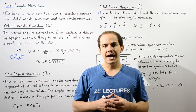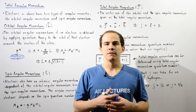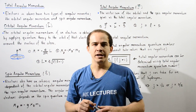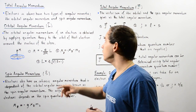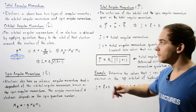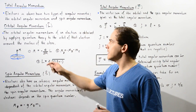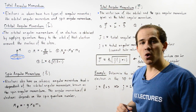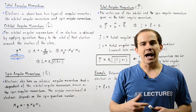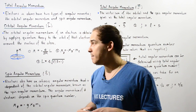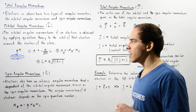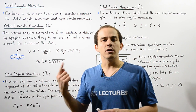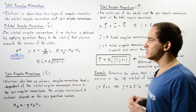An electron within any given atom can have two different types of angular momentum. One is called the orbital angular momentum and the second is called the spin angular momentum. The orbital angular momentum, given by uppercase L with an arrow symbol on top, was already discussed in our previous discussion on the magnetic dipole moment of the electron and the Bohr magneton, where we applied quantum theory to the orbit of the electron around the nucleus of the atom.